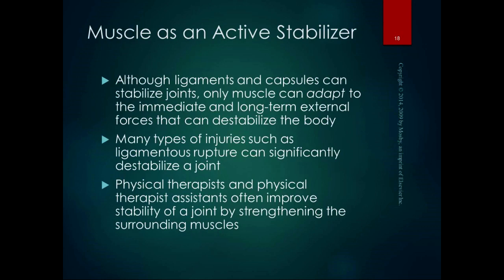Muscles act as active stabilizers. Ligaments and joint capsules act to stabilize joints, but muscles are active stabilizers — they can adapt to external forces that can destabilize your body. For example, standing on a bus that's stopping and having to co-contract those muscles in order to keep from falling over. A lot of injuries like ligament injuries can significantly destabilize your joint, so a lot of times we are working on improving the stability of a joint by strengthening the surrounding muscles. Whether you have a sprain or a ligament rupture, strengthening the muscles goes a long way towards stabilizing those joints.